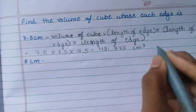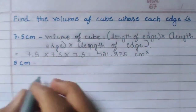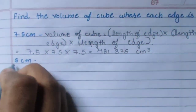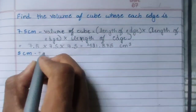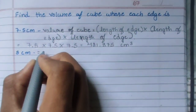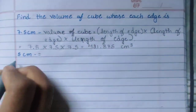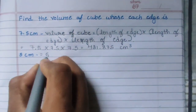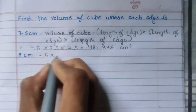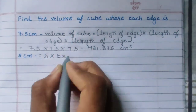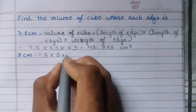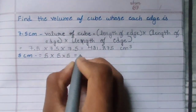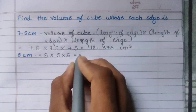Next question. The edge is 5 cm. Now we have to multiply 5 three times: 5 × 5 × 5.